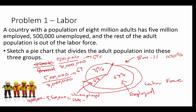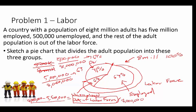That gives us 2.5 million people out of the labor force. If we do 2.5 million divided by 8 million, we get 31%. So in our pie chart: 63% are employed, 6% are unemployed, and 31% are out of the labor force. That's what the pie graph looks like — mine's a little sloppy, but hopefully you can see the process.